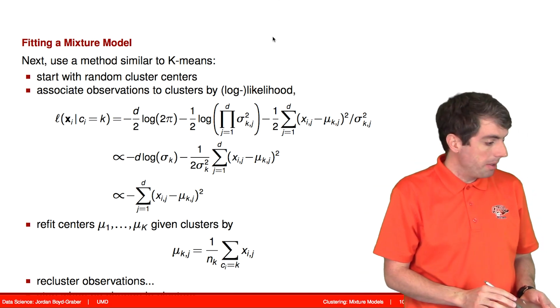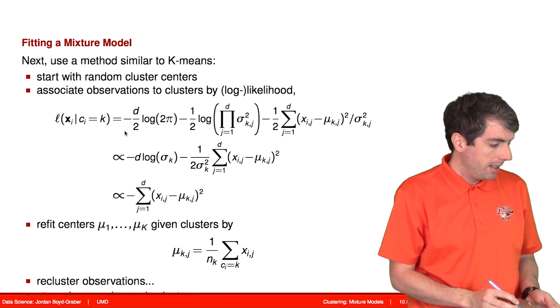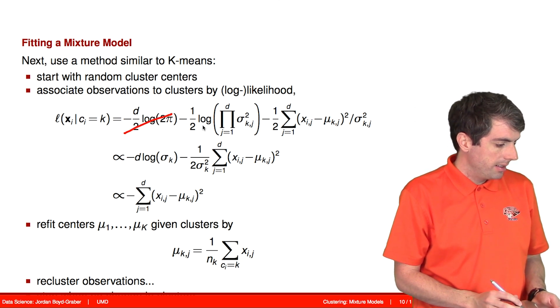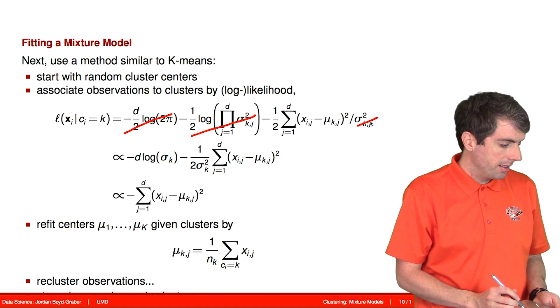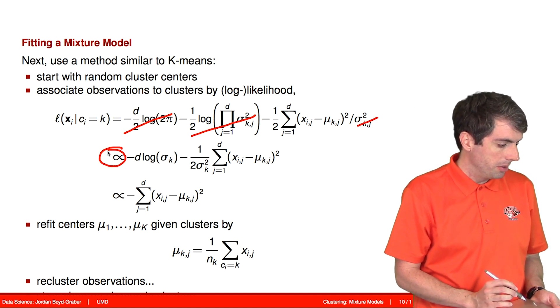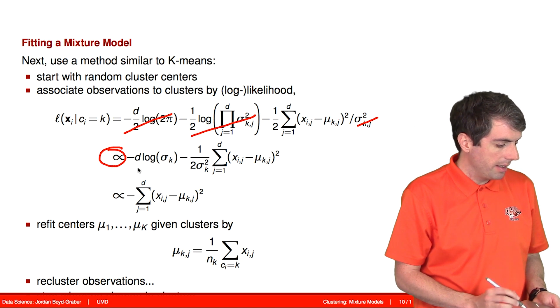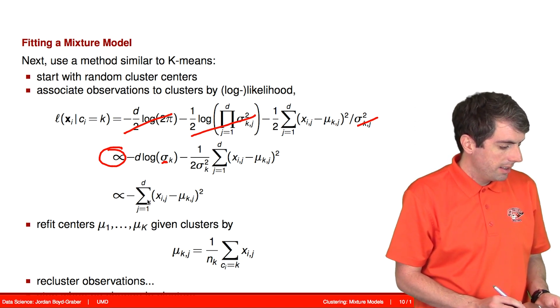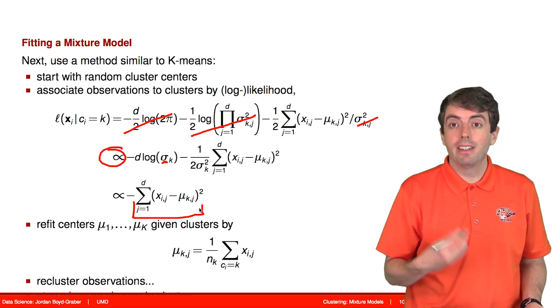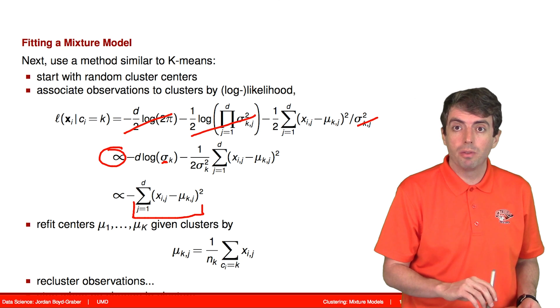If you work through the math, you'll see a lot of this falls away. This is a constant, this is a constant, and this is a constant. So we'll just write this as proportional to this term here. And then all that we're really left with that doesn't depend on the sigma, which is assumed to be a constant, is this term here, which looks a lot like the distance function that we were computing before in k-means.